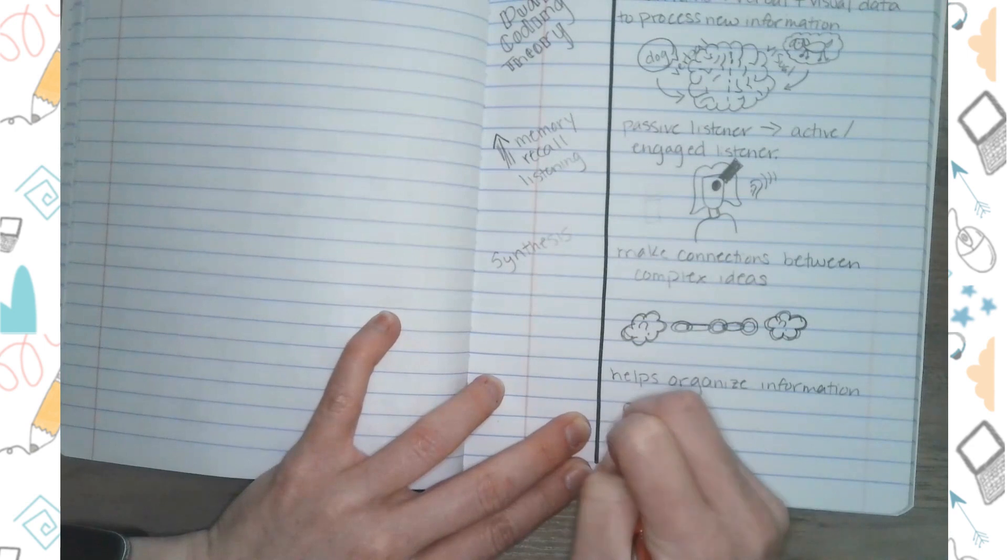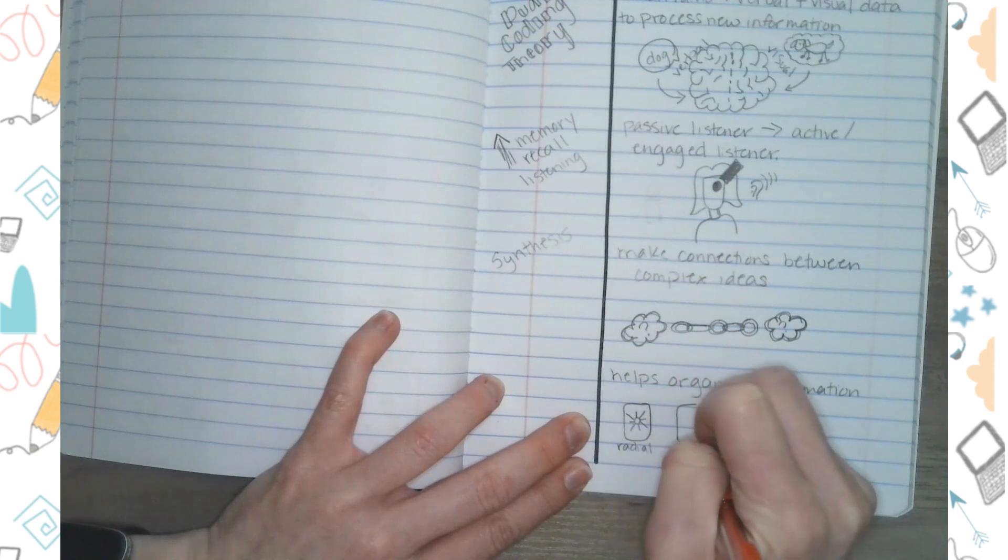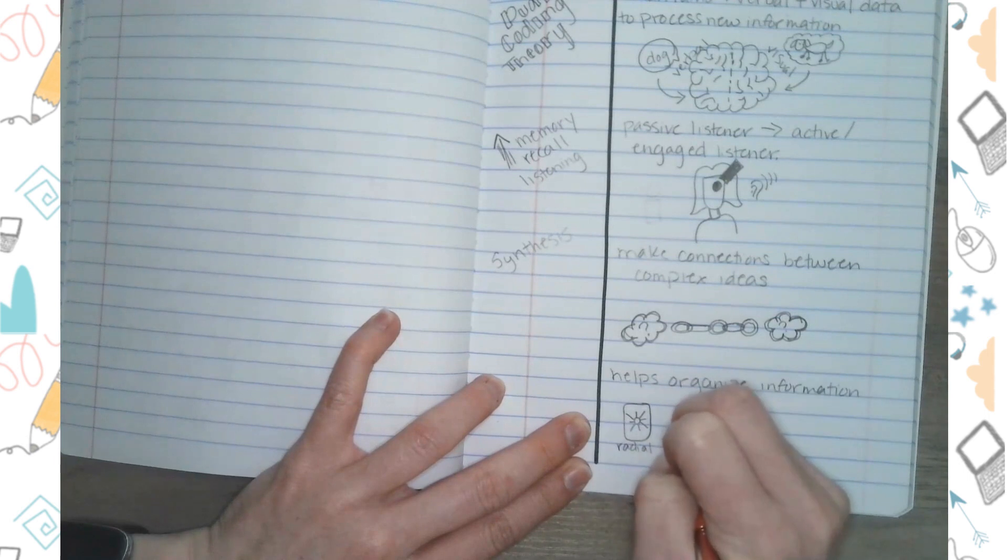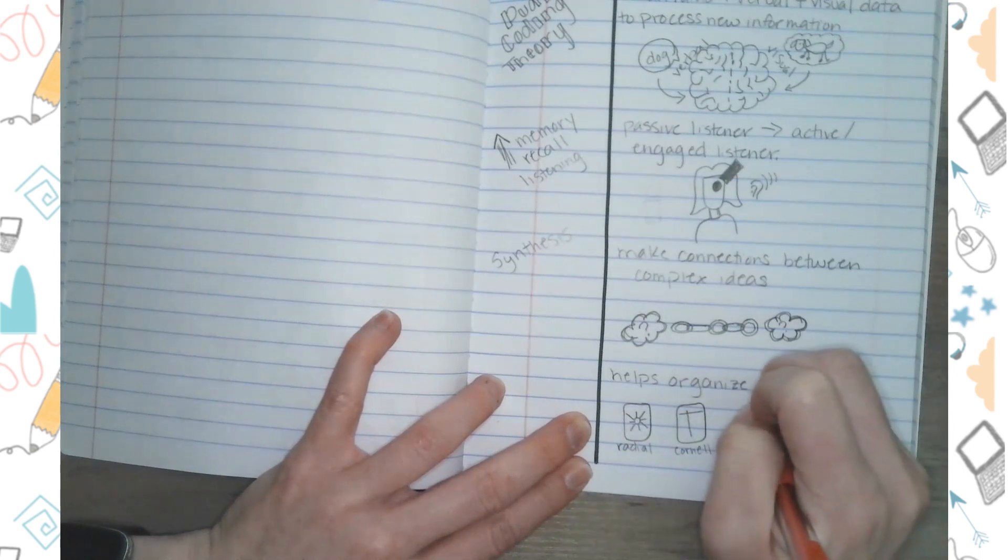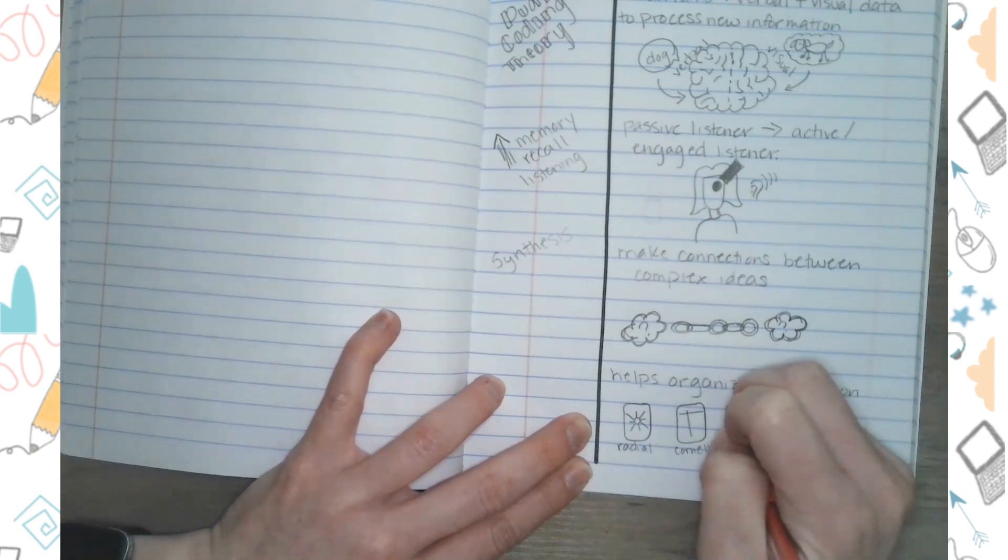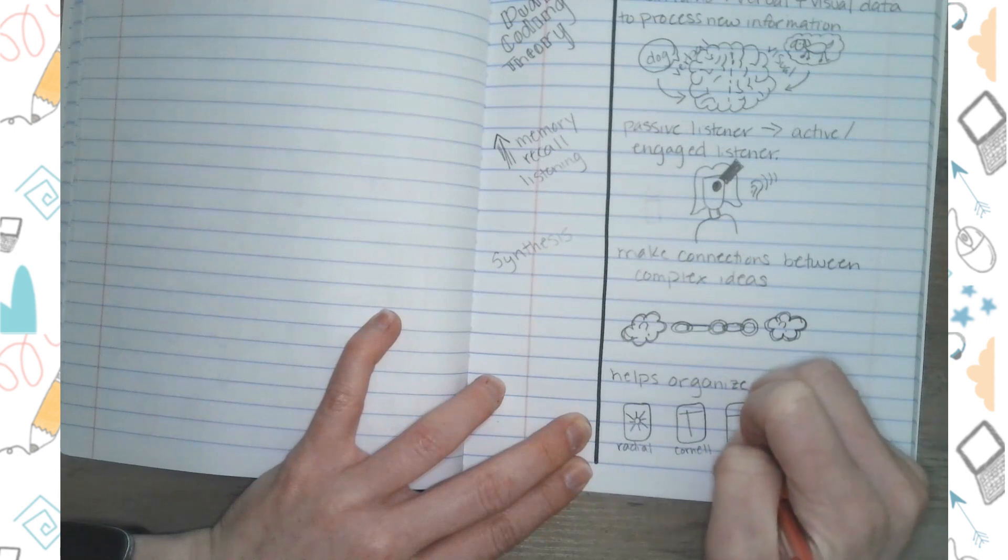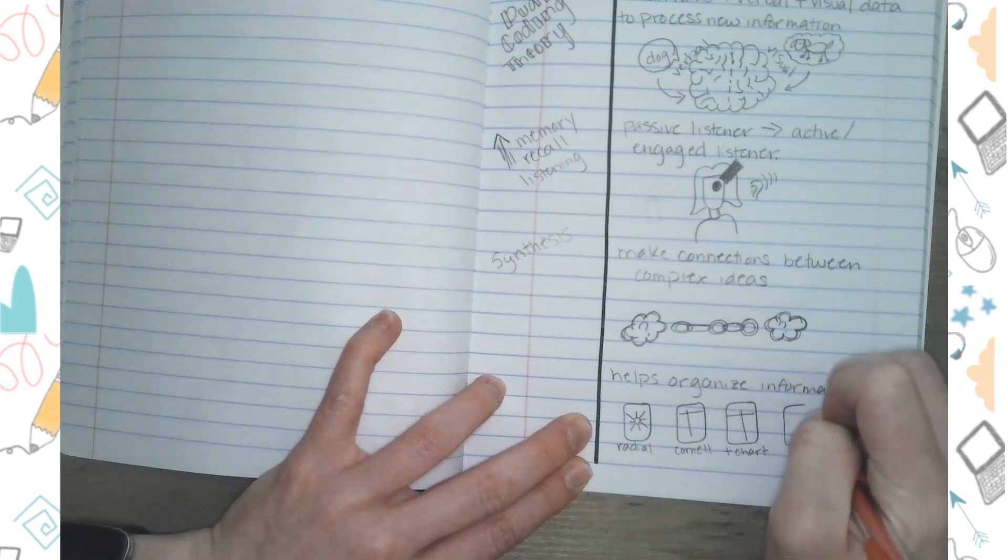So the first one I'm going to draw, I'm going to label as radial. The next one is actually the structure we're using now of the Cornell method. The third structure that we have used in the past is a t-chart. And the final structure that we have used is a grid or modular structure.